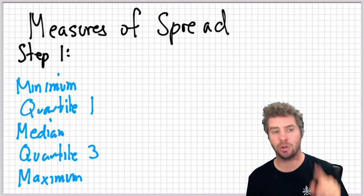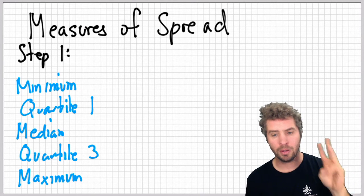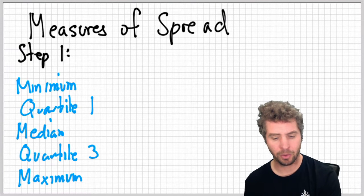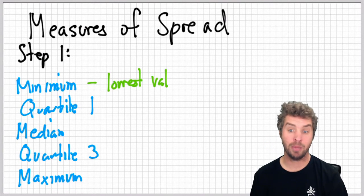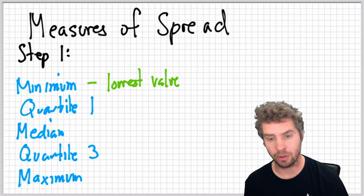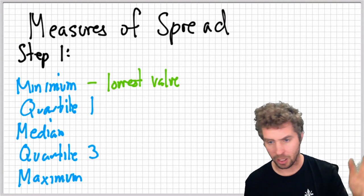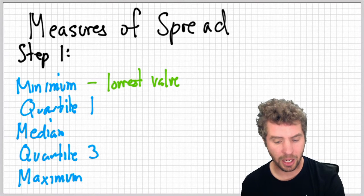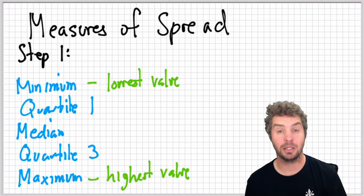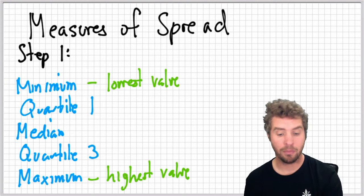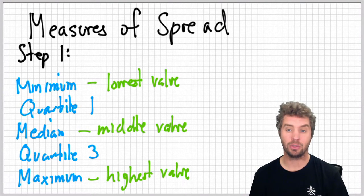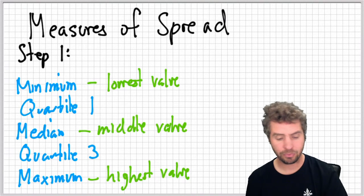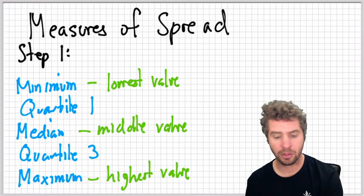So those five pieces of information are the minimum, quartile one, median, quartile three, and maximum. Three of those you might be fairly familiar with, two of them might be new. So minimum is your lowest value, just the first lowest, least smallest value in the data set, and the maximum, likewise, is the largest value. Median you might be familiar with, it's the middle value. So whatever's right in the middle of all the data, 50% of the way through. And then there are the quartiles.